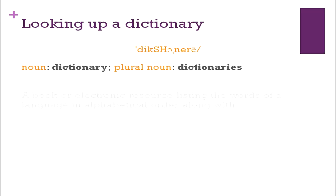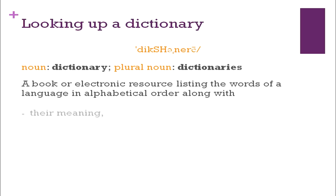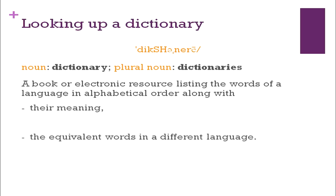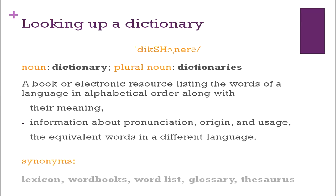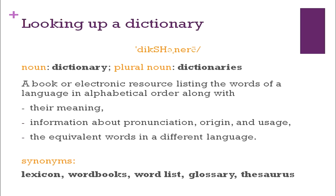Looking up a dictionary is an important task. A dictionary helps you understand the meaning of a word and how it is pronounced. 'Dictionary' is a noun; plural is 'dictionaries'. It indicates which category the word belongs to — noun, verb, or adjective. The dictionary meaning of 'dictionary' is: a book or electronic resource listing the words of a language in alphabetical order along with their meanings, pronunciation, origin, usage, and equivalents in other languages. Synonyms of 'dictionary' include lexicon, word books, word lists, glossary, and thesaurus.